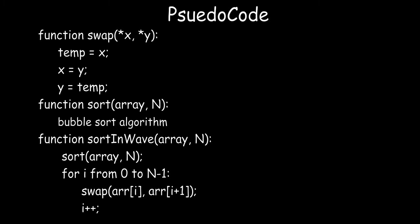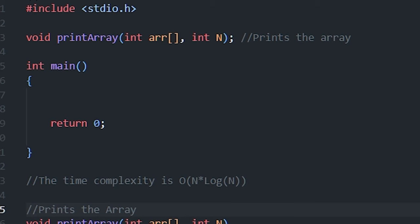Now let's look at the pseudocode for this method. We implement a swap function which takes pointers of both elements to be swapped. Then we implement a sort function using bubble sort, taking the array and its size as parameters. Finally, we implement the sort_in_wave function which calls the sort function, then runs a for loop from 0 to n-1 incrementing by 2, swapping arr[i] with arr[i+1].